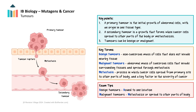This tumour is classified as malignant, because it has the ability to metastasise, meaning it can spread from one location to other parts of the body — this is a characteristic of cancer. In contrast, benign tumours do not metastasise. They grow locally and are usually encapsulated, which helps prevent them from invading surrounding tissues or spreading to other parts of the body. Although benign tumours can cause health issues depending on their size or location, they are not cancerous and generally have a better prognosis than malignant tumours. Understanding the distinction between benign and malignant tumours is crucial, because it influences treatment and overall prognosis.